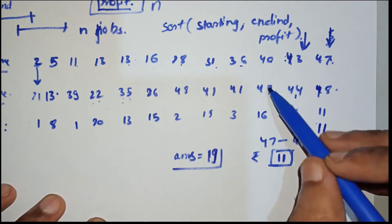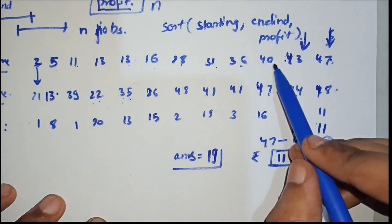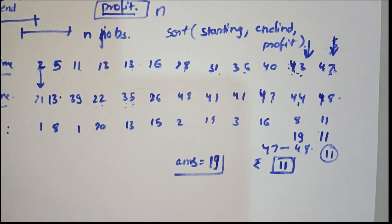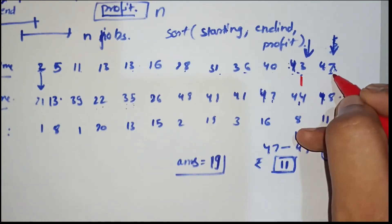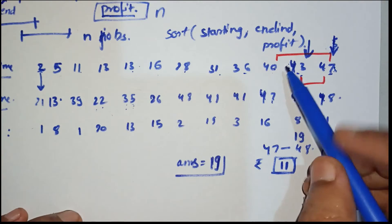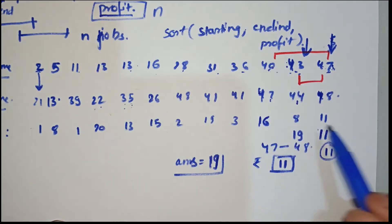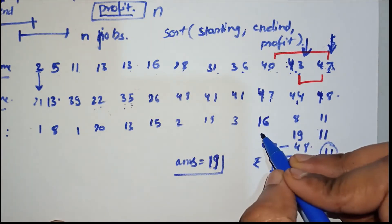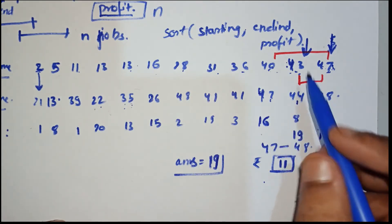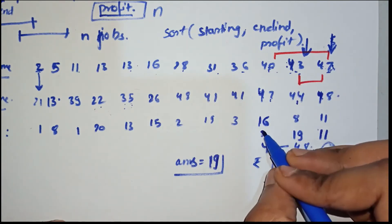Now can we complete the work from 40 to 47 along with the others? No — we can either do the 40-47 job alone or combine it with 47-48. The profit would be 11 plus 16 equals 27. So comparing 27 and 19, the maximum is 27. I'm storing 27 here and our current answer is 27.